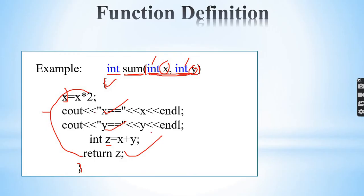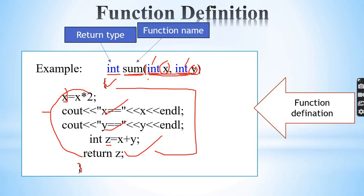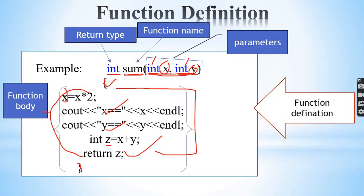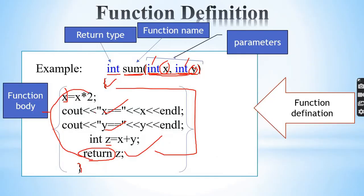So the task is the function definition. The function definition says: return type, function name, parameters. This reveals the formal parameters. This is the return type, this is the function name. If it's integer, it returns integer. This is the code block.